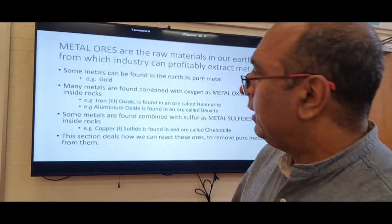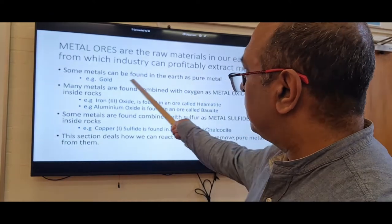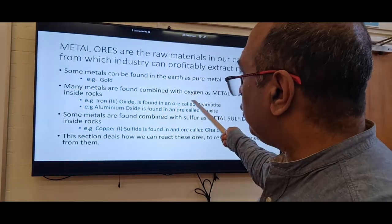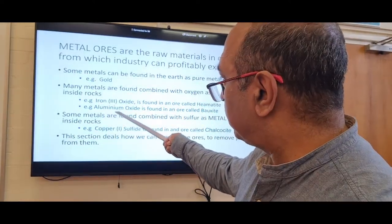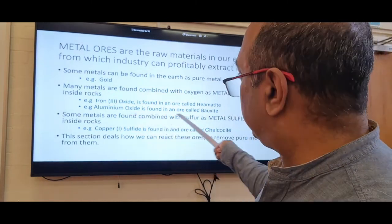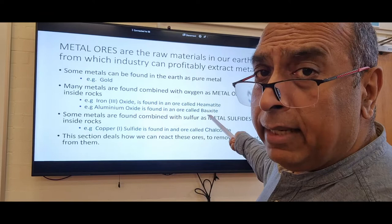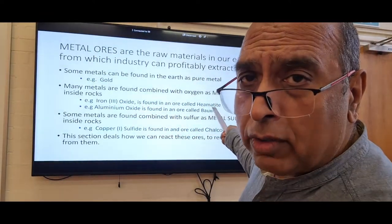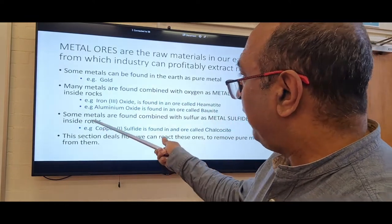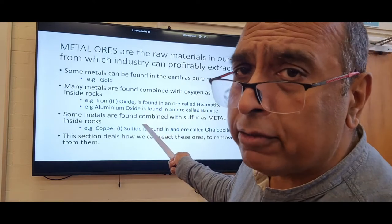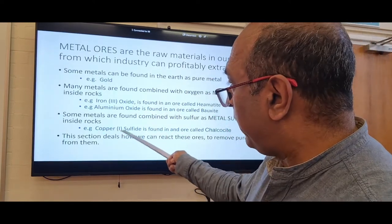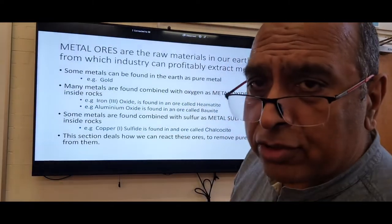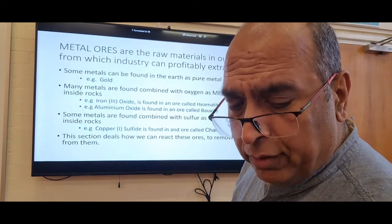Some metals are found as the pure metal — gold for example. Many metals are found combined with oxygen: aluminium oxide is found in an ore called bauxite, and iron(III) oxide Fe₂O₃ is found in an ore called hematite. Some metals are found combined with sulfur as sulfides — copper(I) sulfide is found in an ore called chalcopyrite.